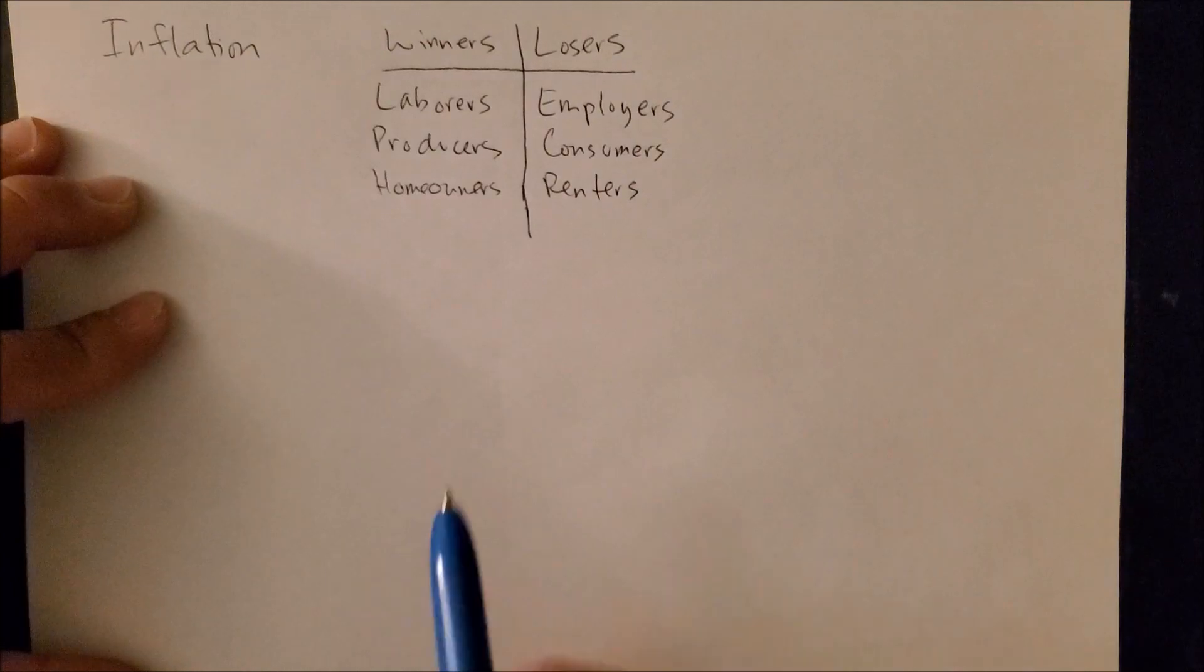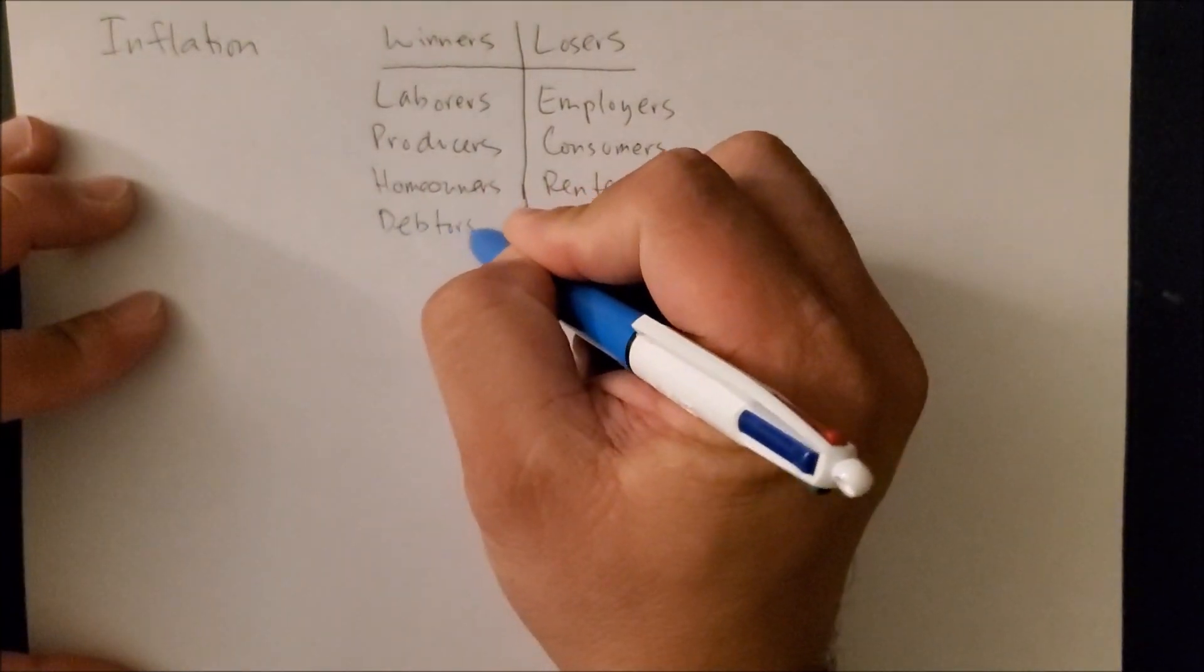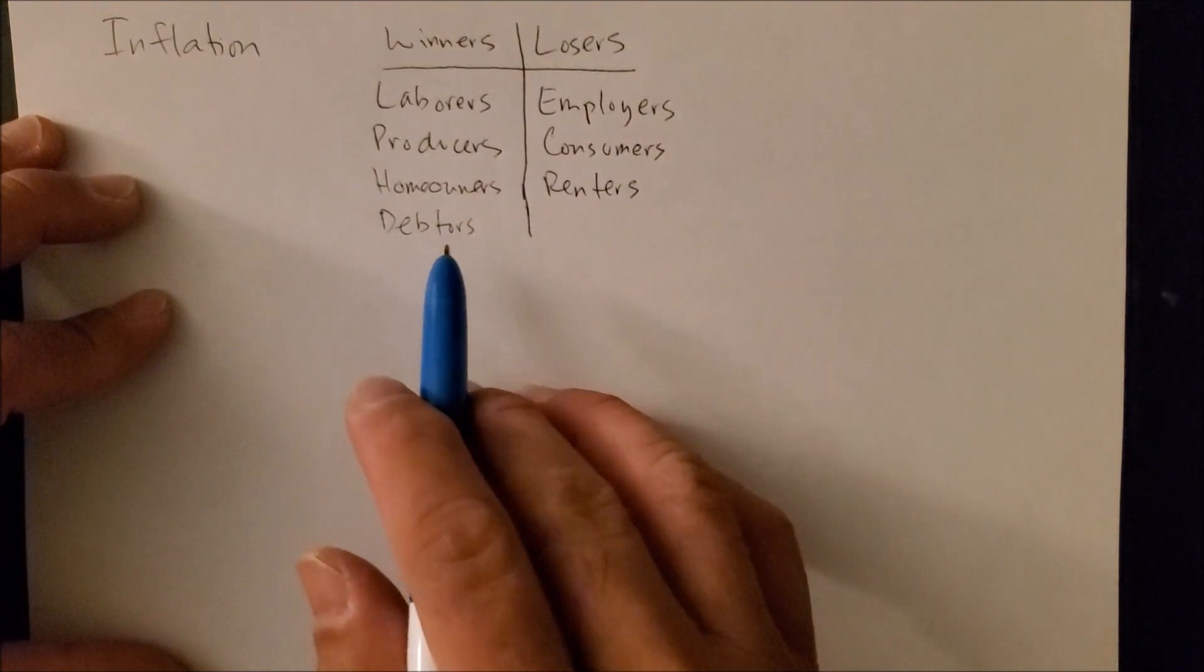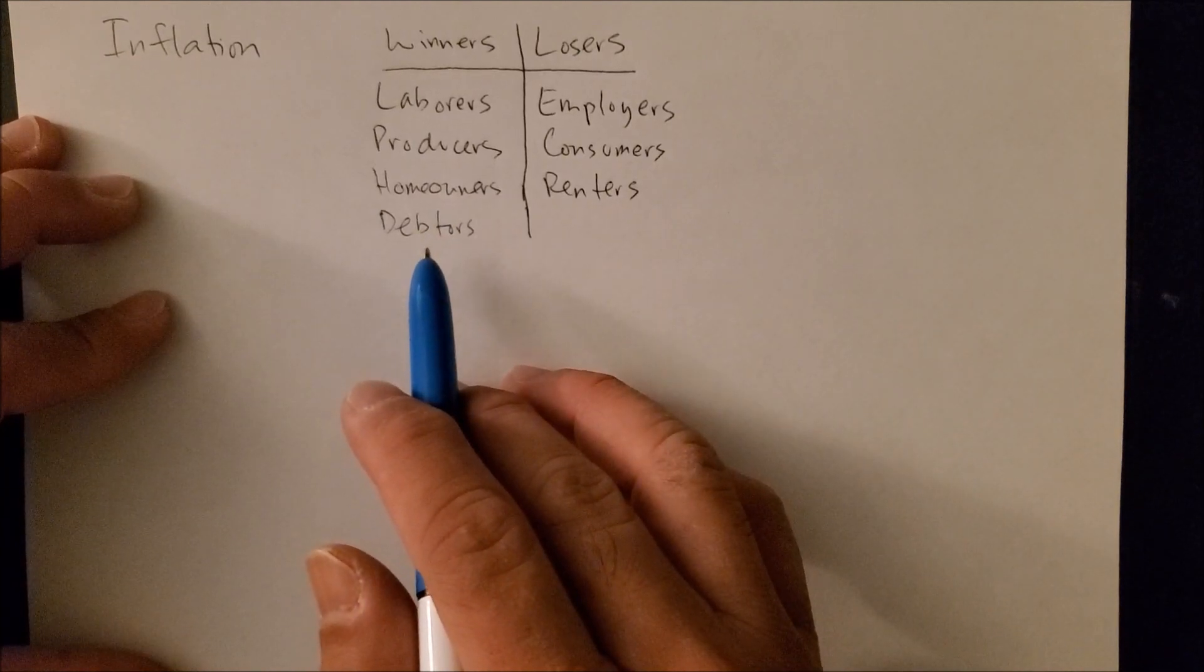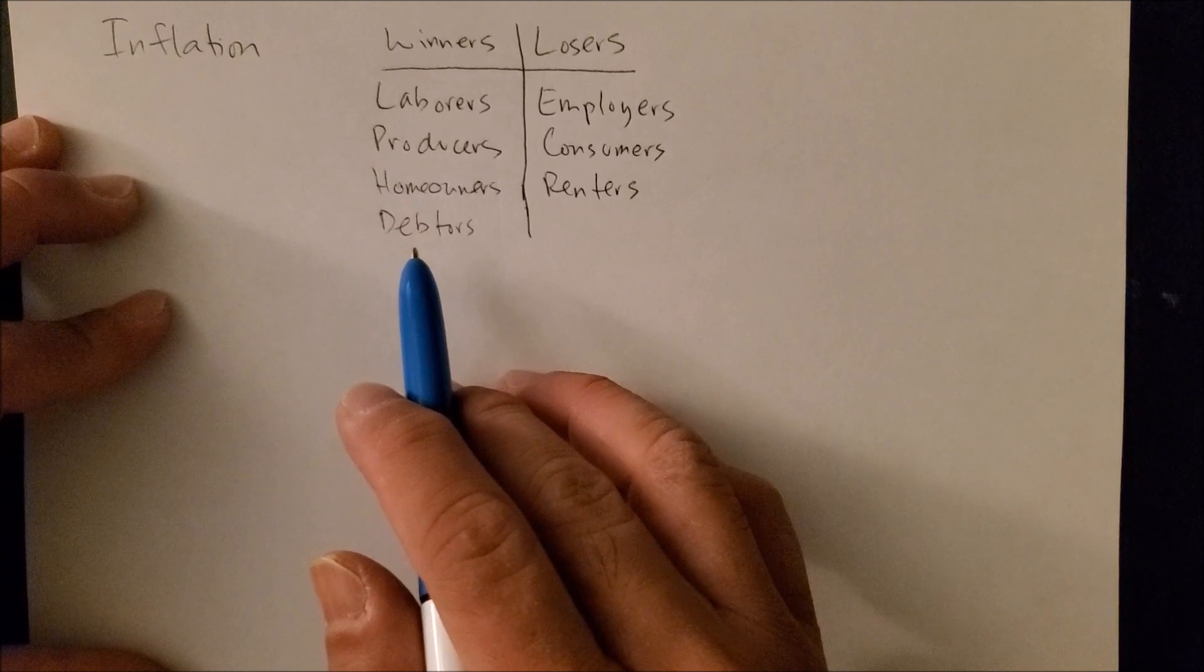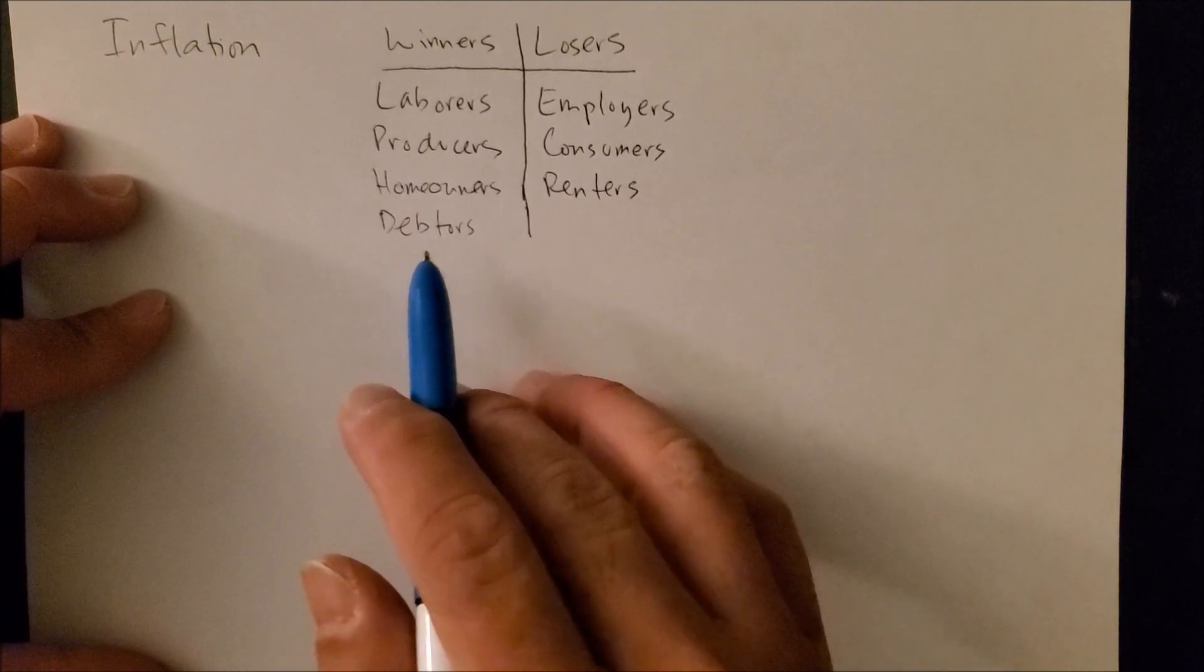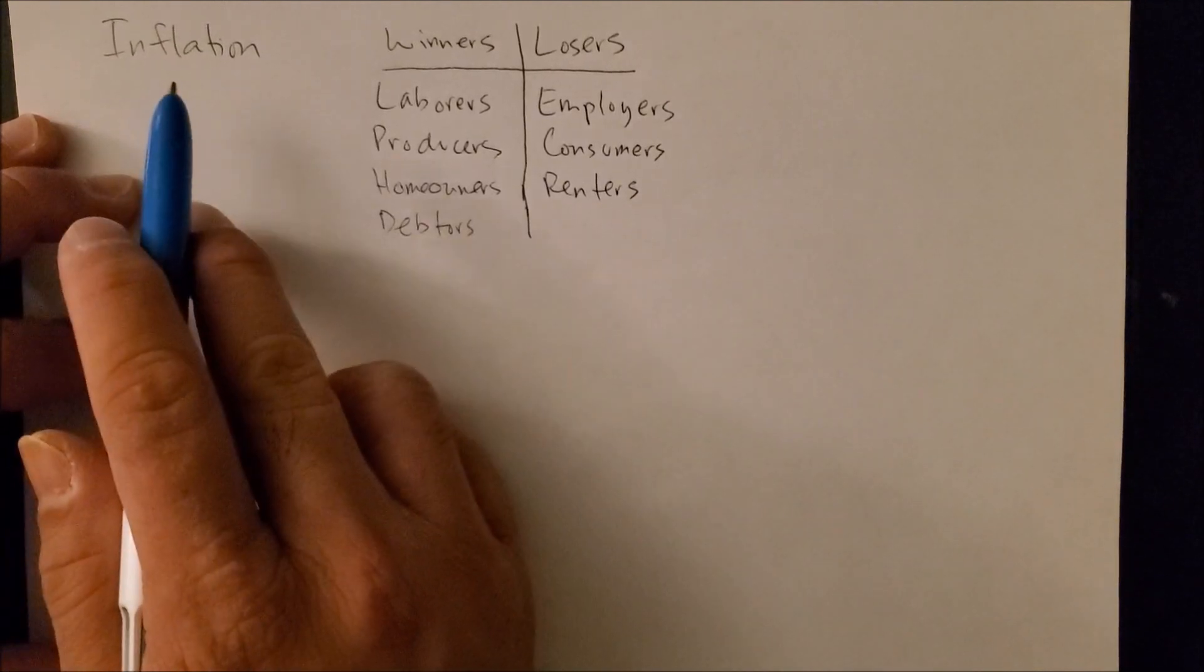And one more group to include, winners, are those who borrow money, what we call debtors. And this makes sense because if you are going to borrow money from a bank, if you borrow $100 today and you'll pay the bank back next year, next year that $100 is not going to be worth $100. So debtors are going to win when we borrow money and inflation rises.